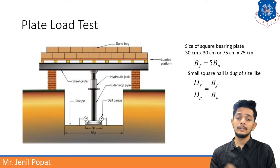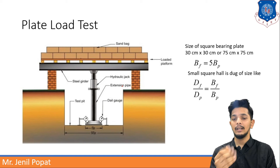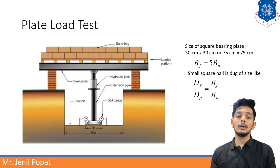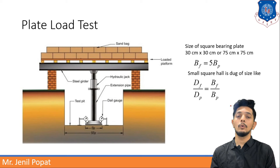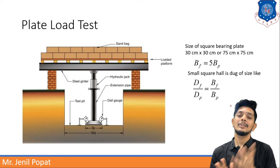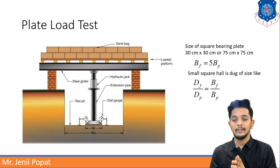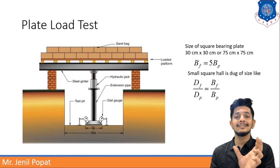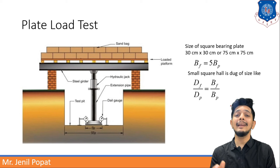The plate load test is performed to determine both settlement and bearing capacity. The plate size should be 30 cm × 30 cm or 75 × 75 cm as standard. The ratio DF/DP = BF/BP, meaning depth of foundation to depth of plate equals breadth of foundation to breadth of plate. So when selecting plate dimensions, scale them according to your foundation size — the breadth-to-depth ratio must be maintained.